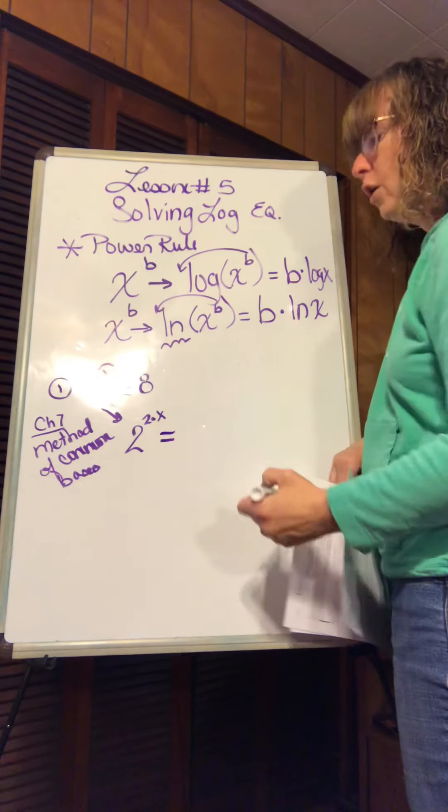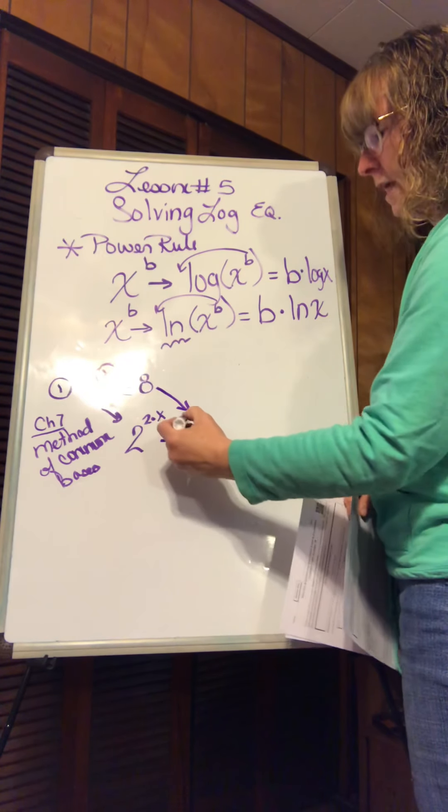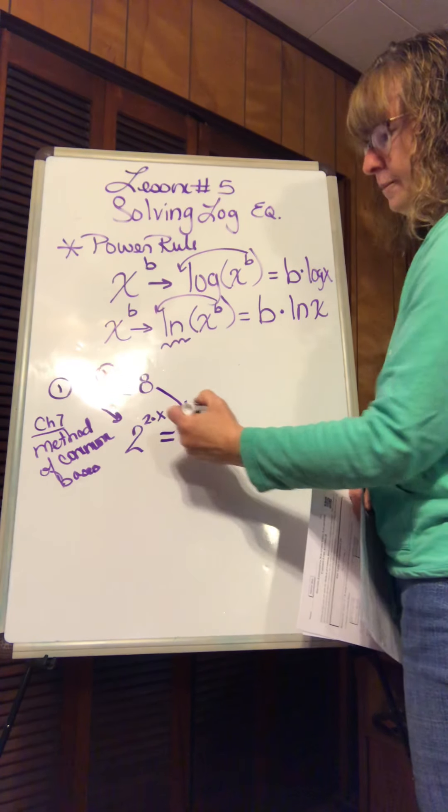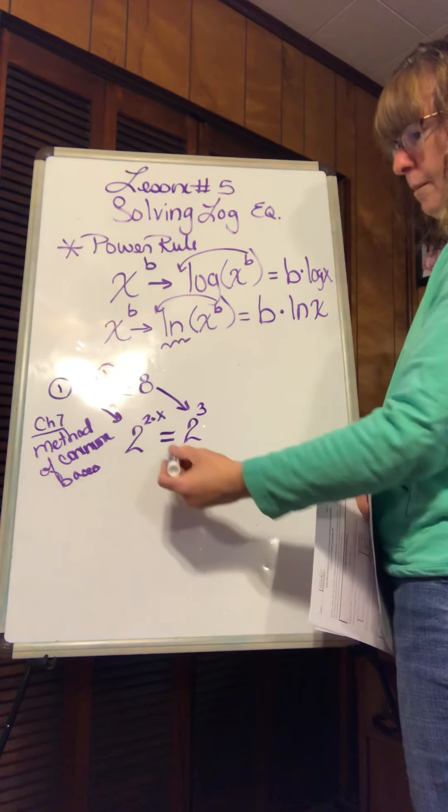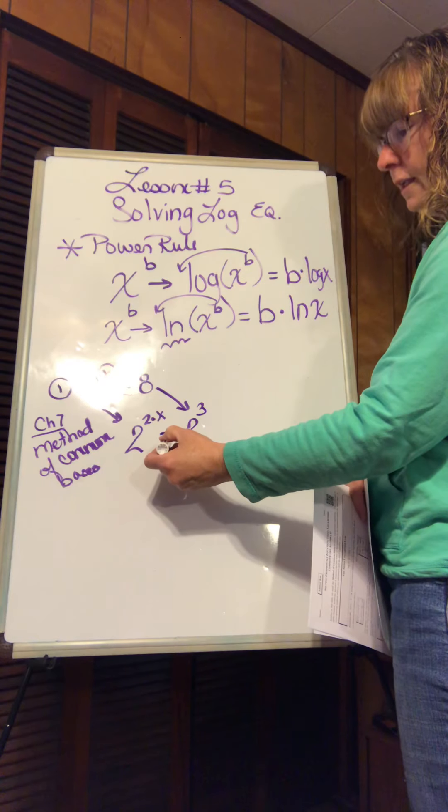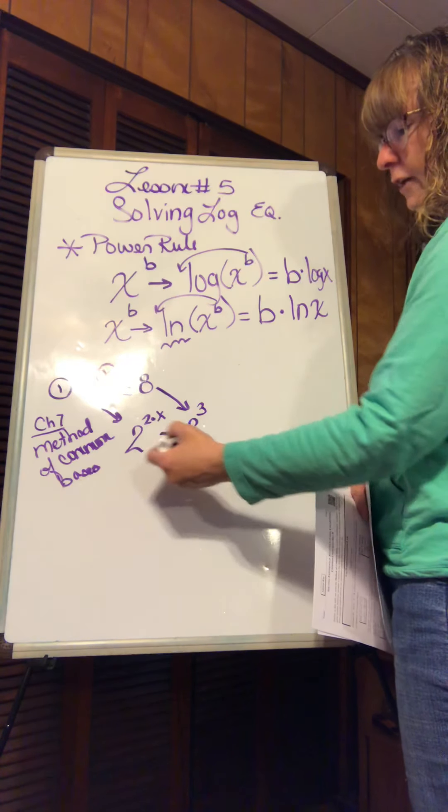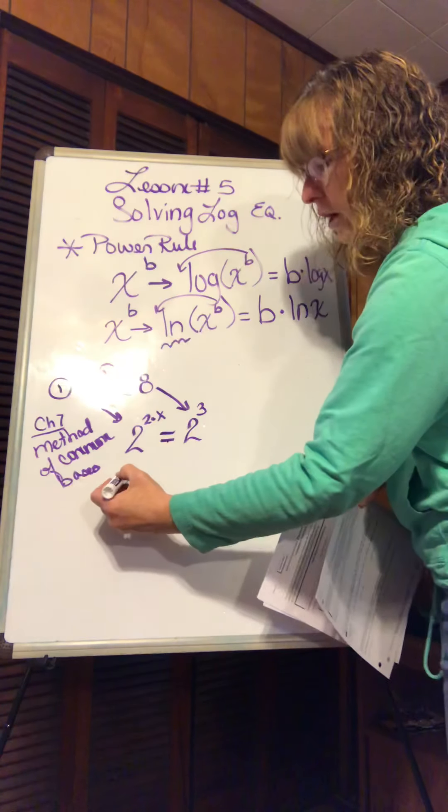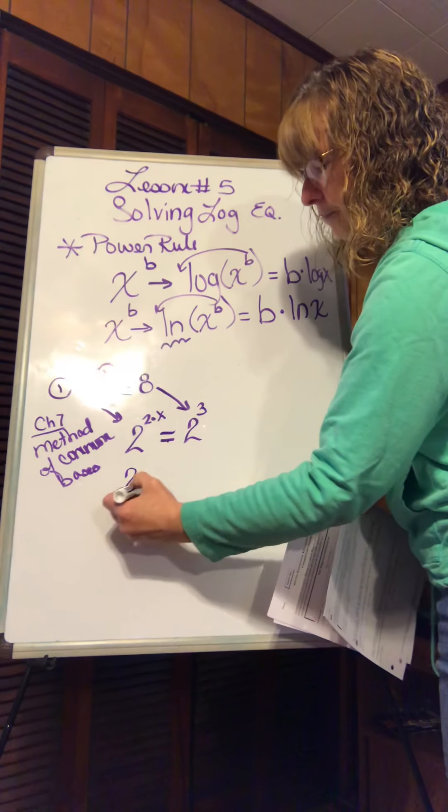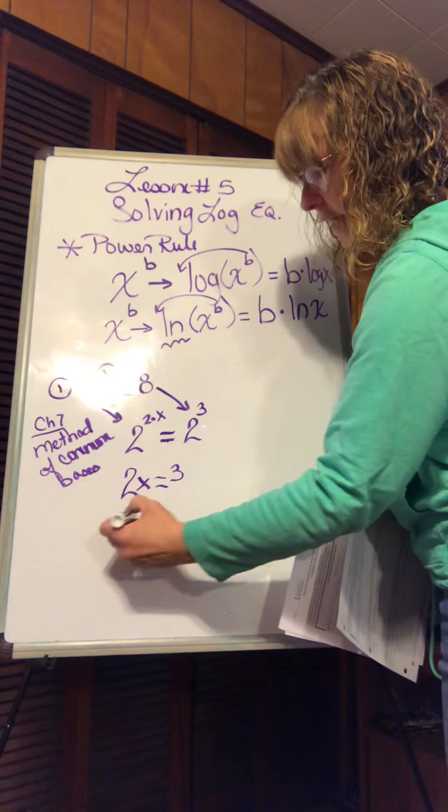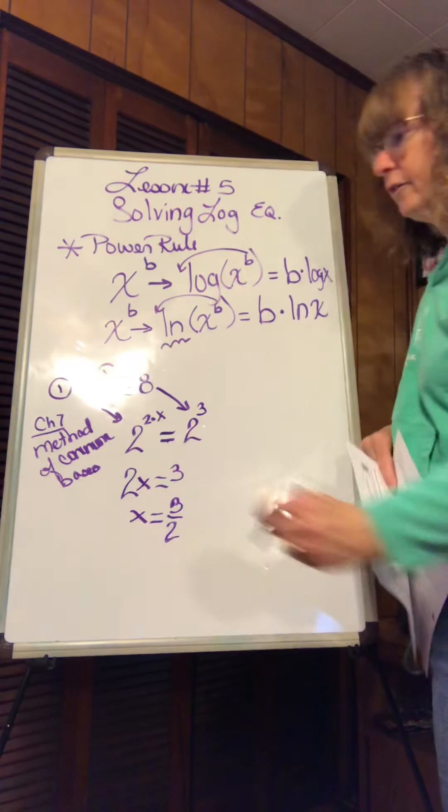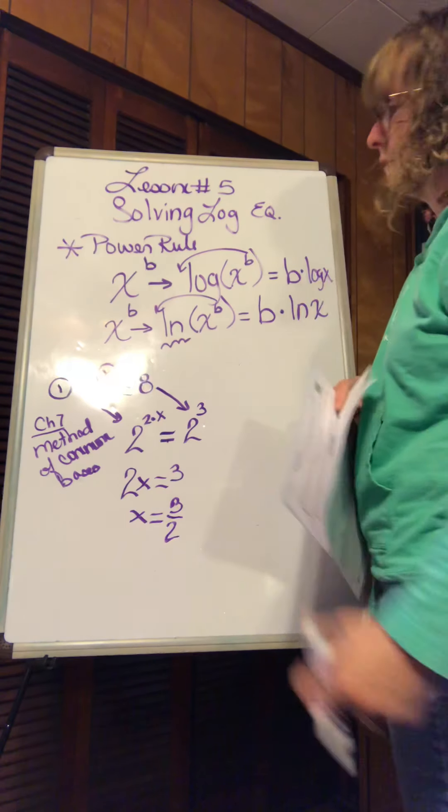Here's an 8, change it out for me. 2 to the 3rd. And then we would talk about the concept of equality. If two sides are equal, they're the same. Bases are the same, therefore the exponents are the same. And so then x would become 3 halves. 1.5 works, 3 halves works as well.